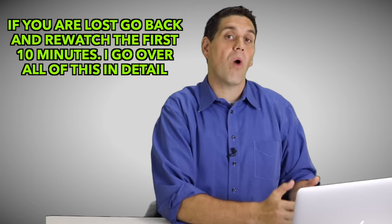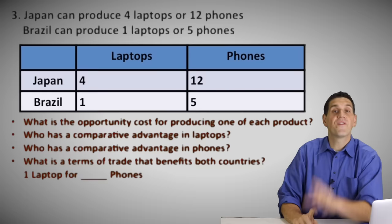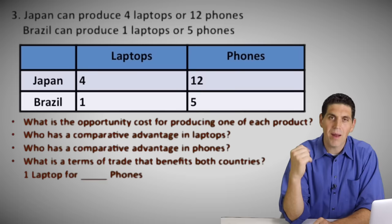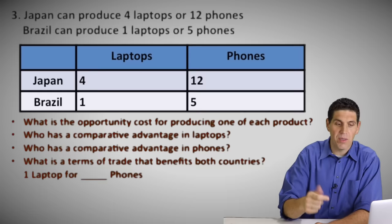If you're having a really hard time and totally stuck, go back and look over your notes or rewatch the beginning of this video. If it doesn't make any sense, it doesn't help to move forward. Go back, rewatch, get it back in your mind, and then practice. For situation number three, we've got Japan and Brazil with laptops and phones. Notice I'm not asking about absolute advantage on these because that's really easy — Japan has an absolute advantage in laptops and an absolute advantage in the production of phones.